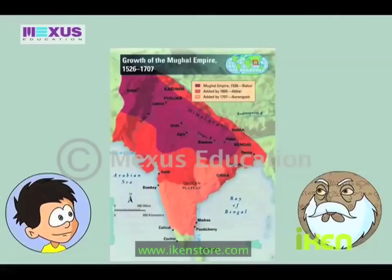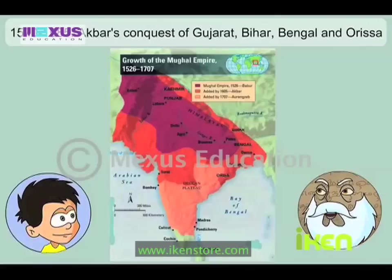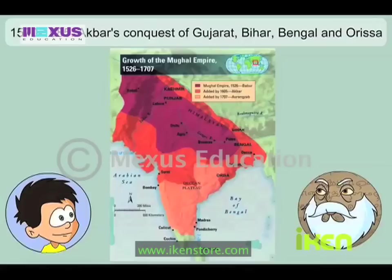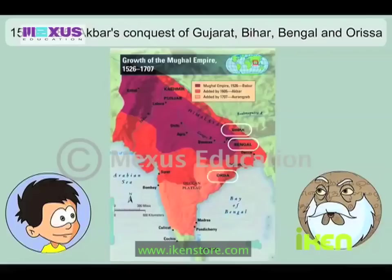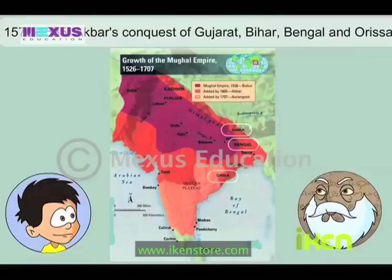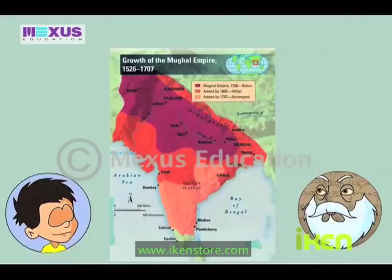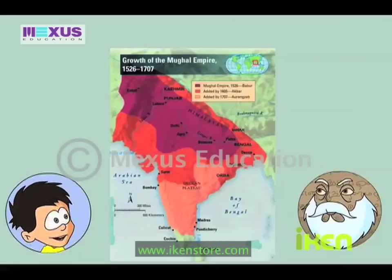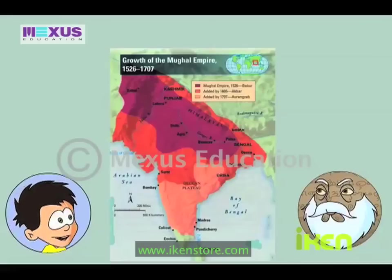In the next 16 years, from 1570 to 1585, military campaigns in Gujarat were followed by campaigns in the east — in Bihar, Bengal, and Orissa. Let's do a quick recap: it was Malwa and Gondwana to start with, followed by Chittor and Ranthambore, then there were campaigns in Bihar, Bengal, and Orissa. Right!